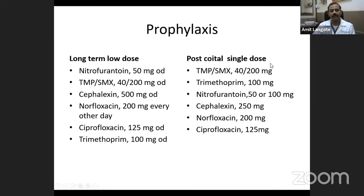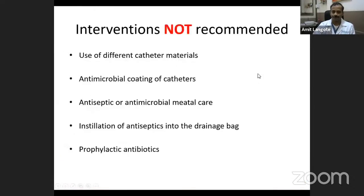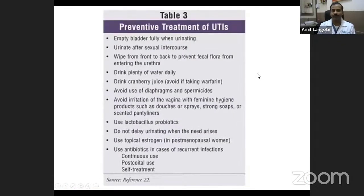For post-coital recurrent UTIs, single-dose treatment with Co-trimoxazole can be used. Single-dose Nitrofurantoin, low-dose single-dose Ciprofloxacin, Cefalexin, or Norfloxacin can also be used. Most importantly, for post-coital infection the female should void immediately after intercourse — do not wait too long, as this helps prevent ascending infection. This final slide incorporates most of the behavioral changes and proactive steps that you can apply in your clinical practice.